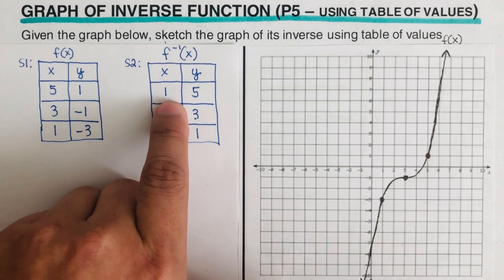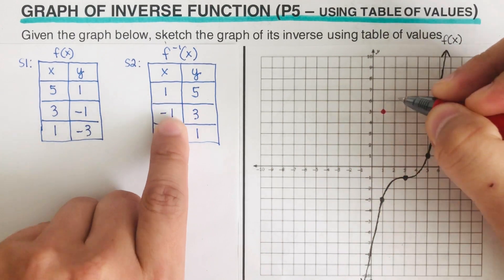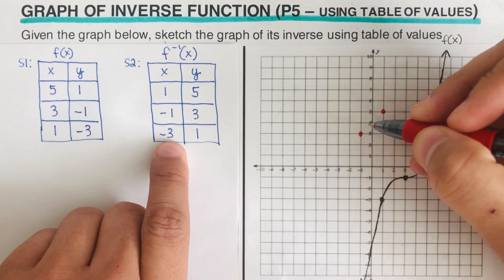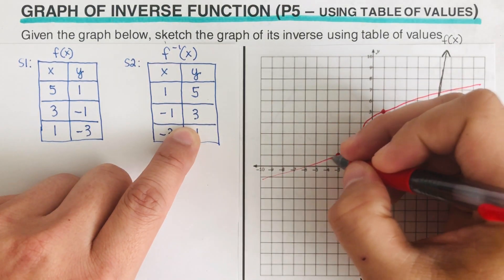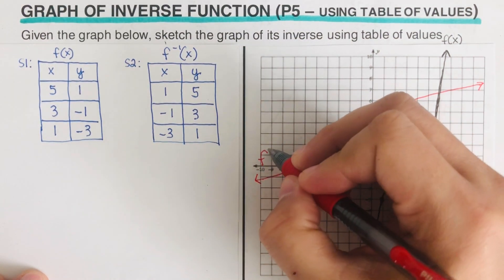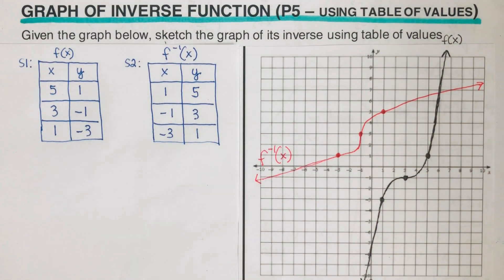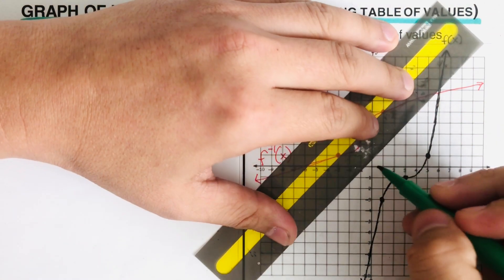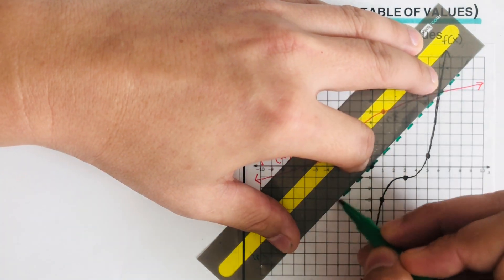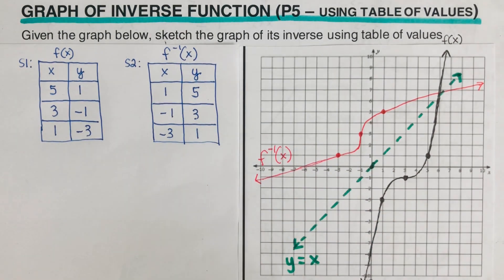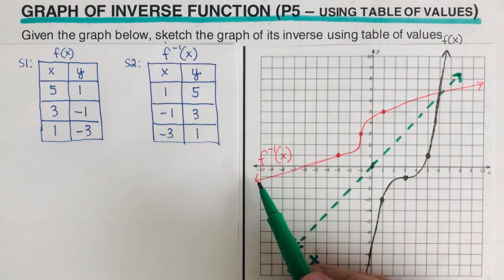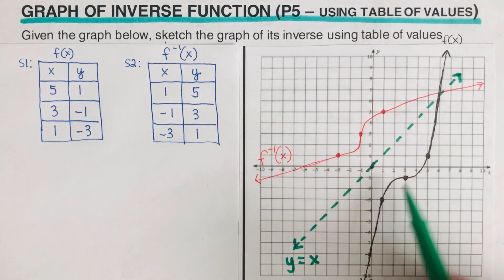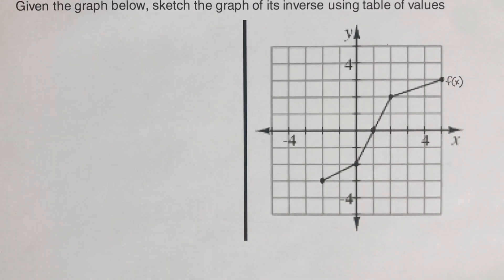Now we are ready to sketch the graph of the inverse. We start with the point (1, 5) — it's going to be here. I label this as f⁻¹(x). If we draw the line of symmetry, which is y = x, we can see from the picture that these two graphs are a match — they are symmetric. This is the graph of the inverse f⁻¹(x) and this was the original f(x). I encourage you to pause this video and try this next problem on your own.